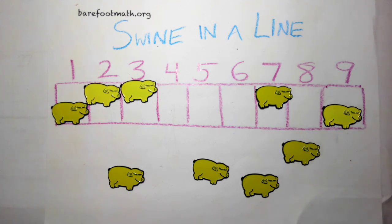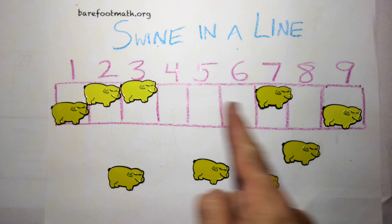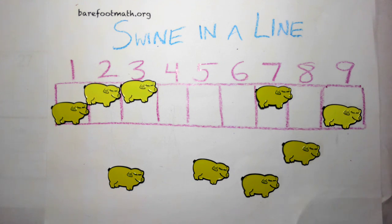Let's play a mathematical game I call Swine in a Line. It starts with nine pigs and a row of nine pig pens we want to put them into. Some of the pens contain a pig at the start of the game, other pens start out empty.